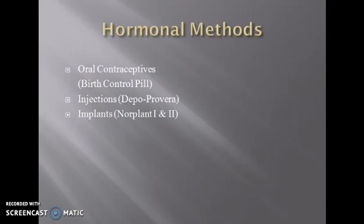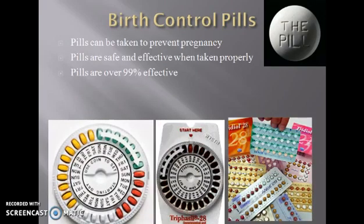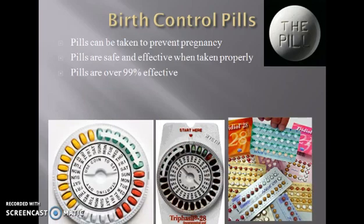Let's look at hormonal methods of family planning. Hormonal methods include oral contraceptives — that is birth control pills. These are taken every day, and when you miss a pill you have to take it immediately when you remember, before using that day's pill. Then we have injections: the Depo-Provera and Noristerát — one for two months and the other for three months. Then we have implants — Norplant type one and two — which are inserted into the skin. These are all hormonal methods.